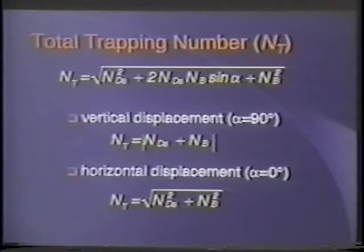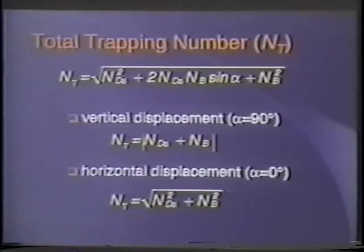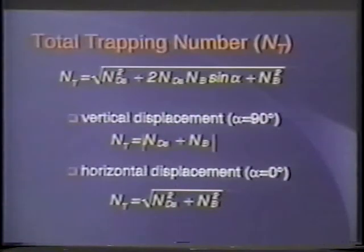You can extend this trapping number idea to multiple dimensions. The trapping number becomes the sum of the squares of the capillary numbers and the bond number, plus a term accounting for direction of flow — in the horizontal case it's the square root of the sum of the squares. This is for an isotropic system — I don't believe in isotropy under field conditions. I did develop the equation for anisotropic media, but it didn't make it into our ES&T paper because reviewers told us to remove the appendix.